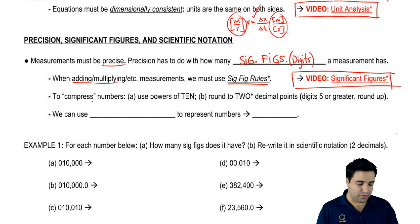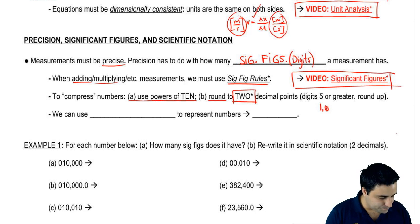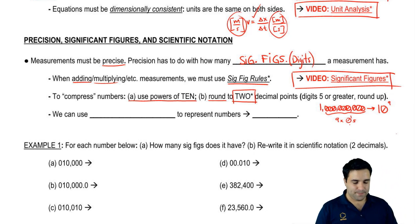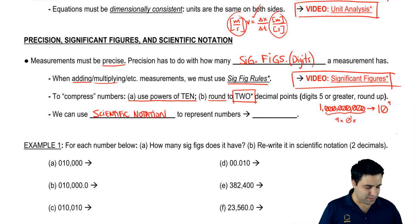There's two ways we can compress numbers. Two important ones are to use the powers of 10 or to round them. In physics, we're usually going to round things to two decimal places. That's just another convention in physics. And the reason to compress numbers, you don't want to write a long number. So for example, if I have something like this, that gets really annoying to write. So I can write it as 10 to the power of 9 because there are nine zeros here. And we can also use what's called scientific notation to represent numbers.